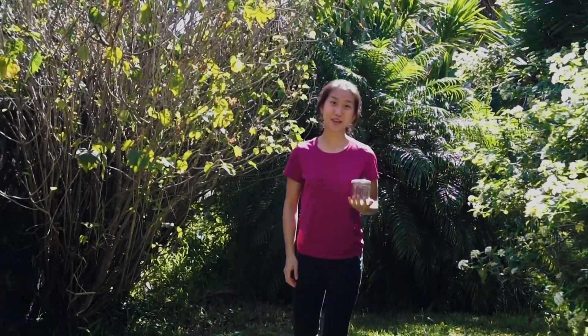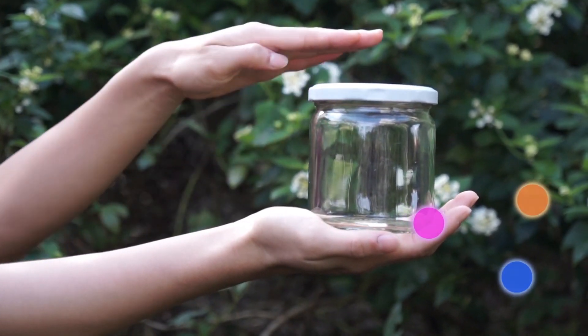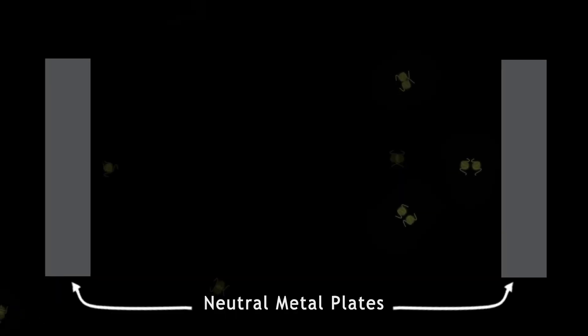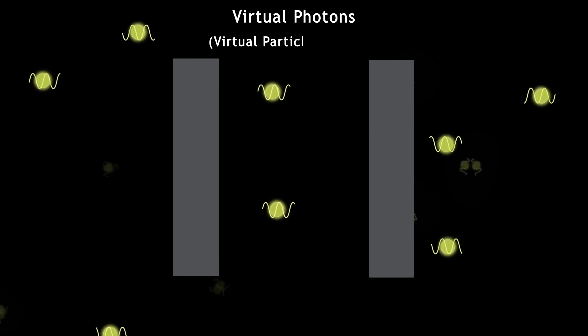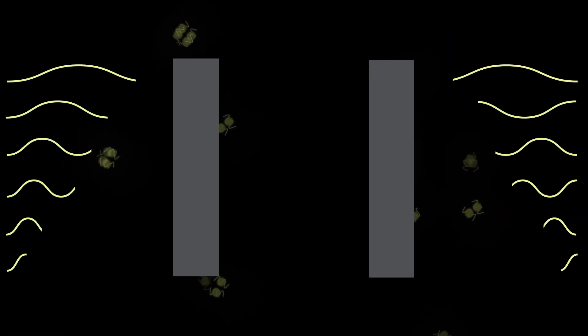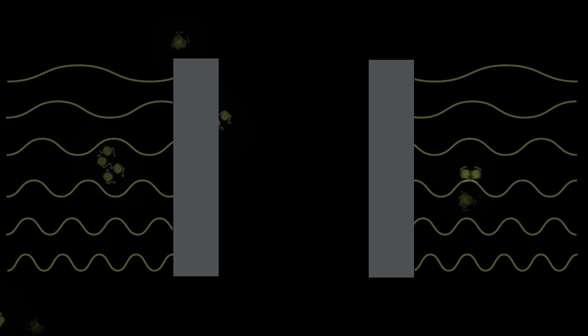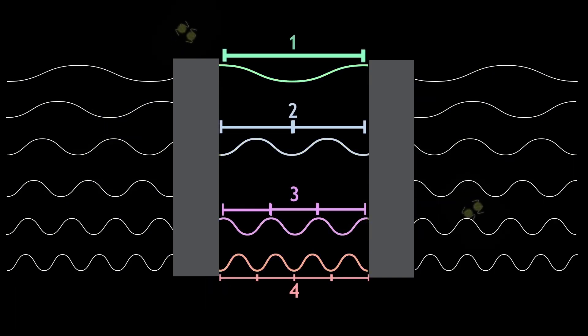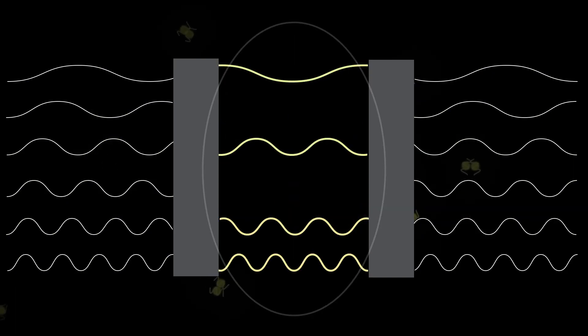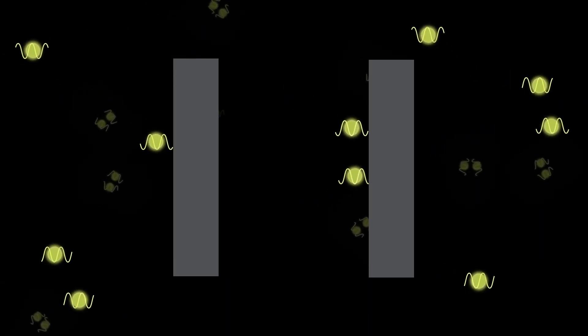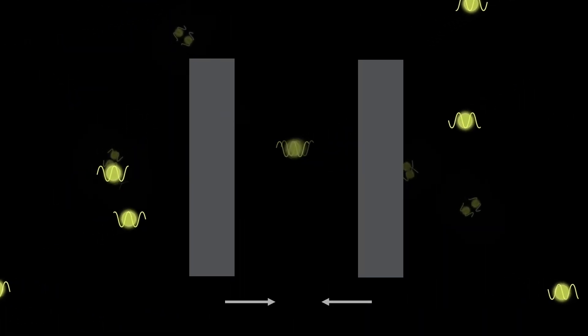Now let's apply this to the Casimir effect. If we create what we would think of as empty space — a vacuum — removing all matter and reducing energy to a minimum, there are still virtual particles and anti-particles that pop in pairs and annihilate out of existence. When we place two neutral metal plates parallel and close together, the plates act as mirrors for virtual photons — virtual particles of light. Virtual photons of all wavelengths bounce off the plates from outside, but only those whose wavelengths fit a whole number of times into the gap bounce between. More virtual photons means a greater force is exerted on the plates from outside than between, so the plates get pushed together.